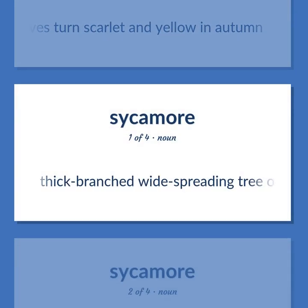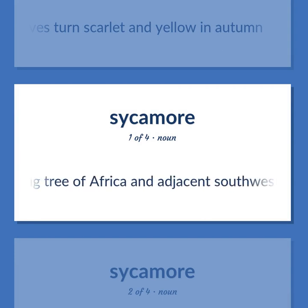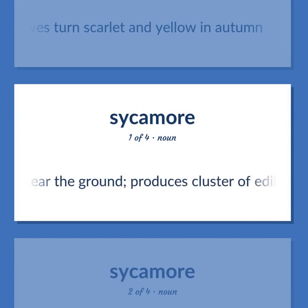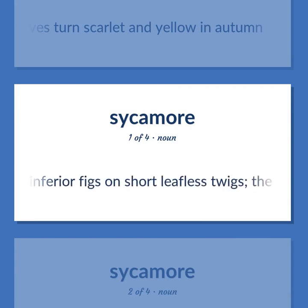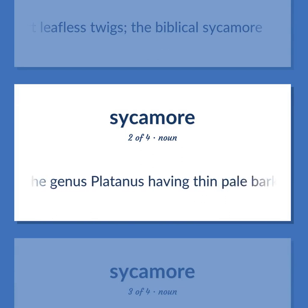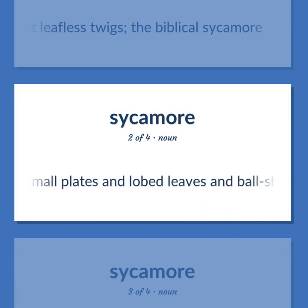Thick-branched wide-spreading tree of Africa and adjacent southwestern Asia, often buttressed with branches rising from near the ground; produces clusters of edible but inferior figs on short leafless twigs — the biblical sycamore. Any of several trees of the genus Platanus having thin pale bark that scales off in small plates and lobed leaves and ball-shaped heads of fruits.